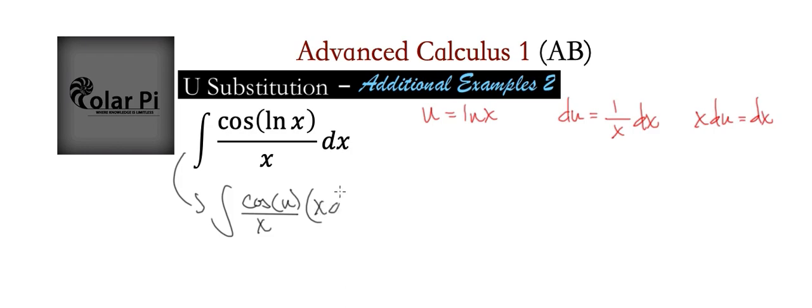then what we'll have is this x here is going to cancel that x there. And so when that happens, we get simply the integral of the cosine of u du.